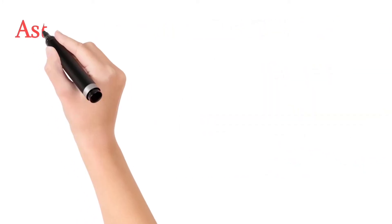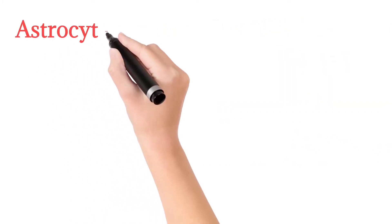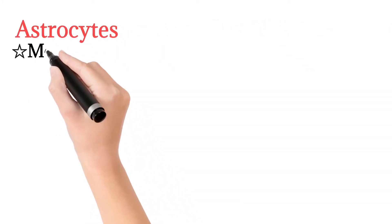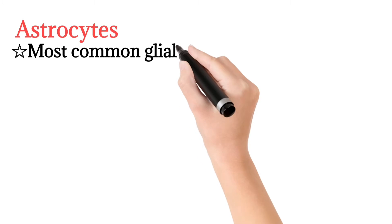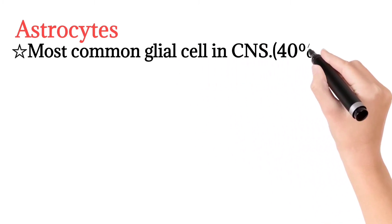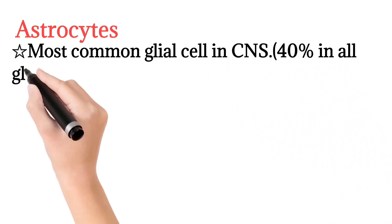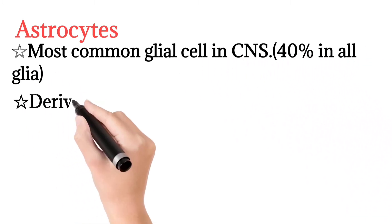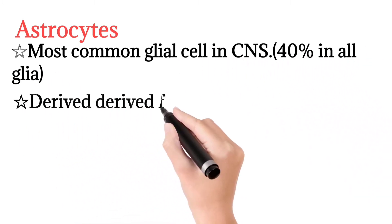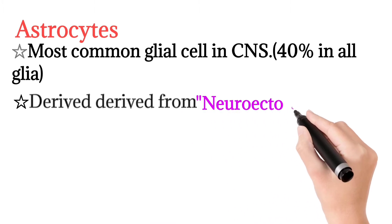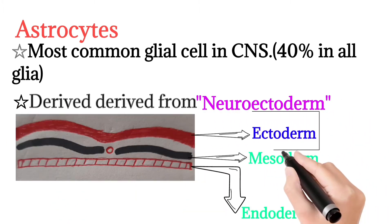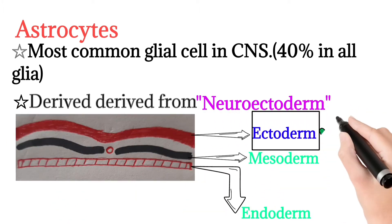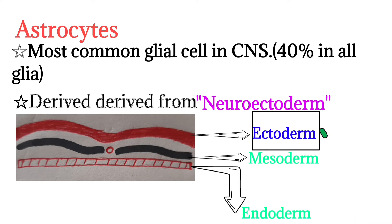Astrocytes are the most common glial cells in the central nervous system, making up about 40% of all glial cells. They are originated from the neuroectoderm, as shown in the figure.